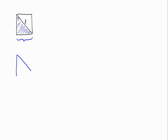For calculating the side length, as we can see, the square can be divided into two equal triangles. And having a look at one of them, we can see that, as it is a square, all of the sides have the same size.